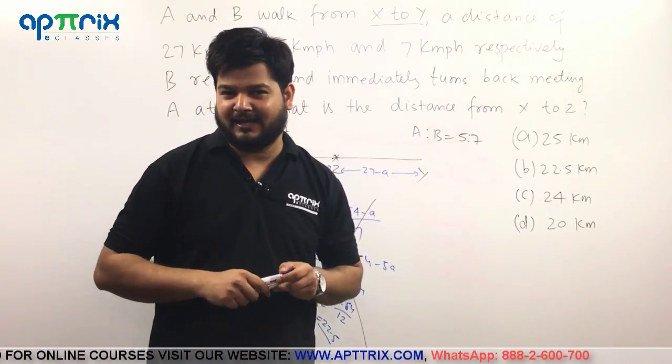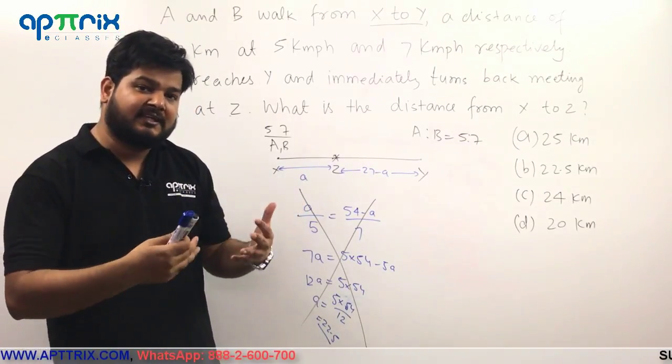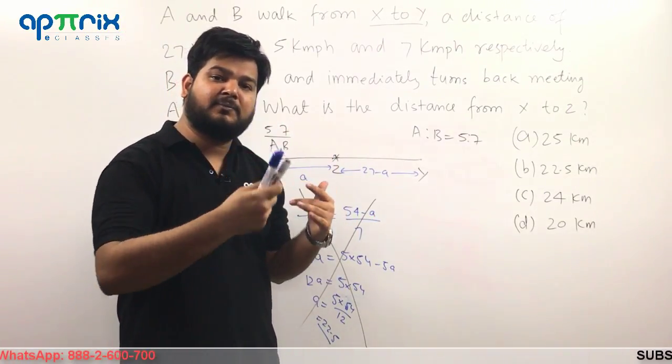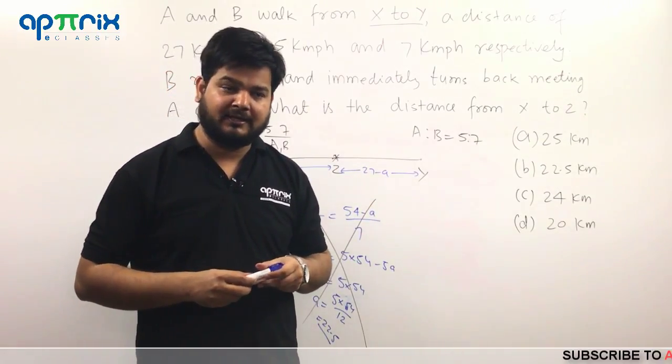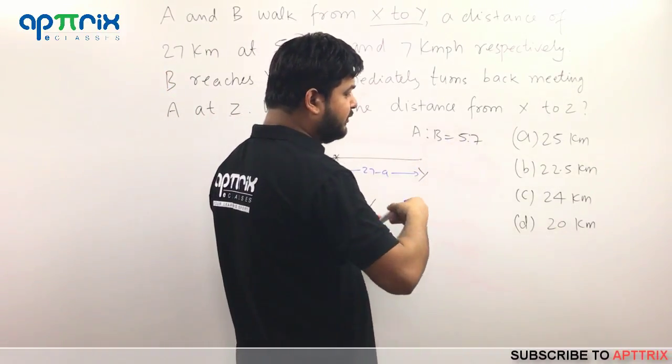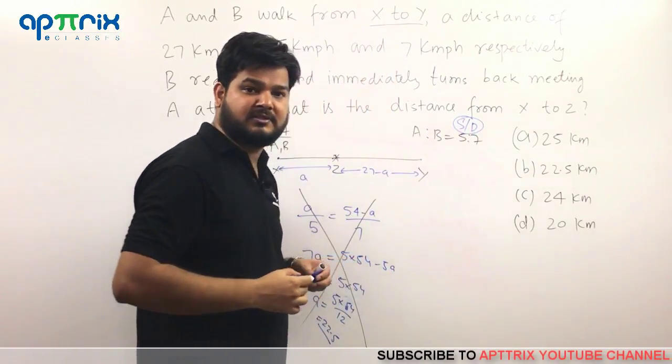Who will walk more? You know that. The one with fastest speed. Or in a way we say that, in case where time will be constant, speed and distance are proportional. So if this is the speed ratio, this will be distance ratio also. Both will be same since time is constant.